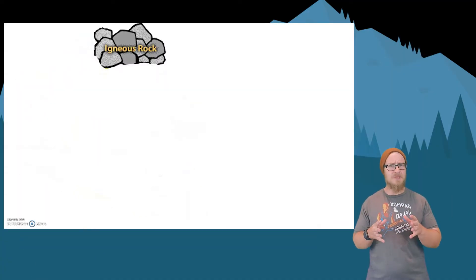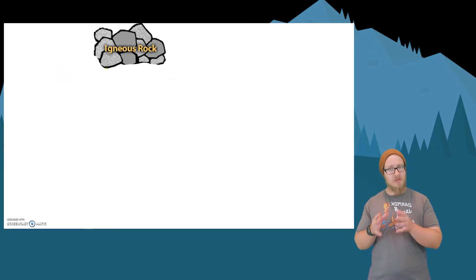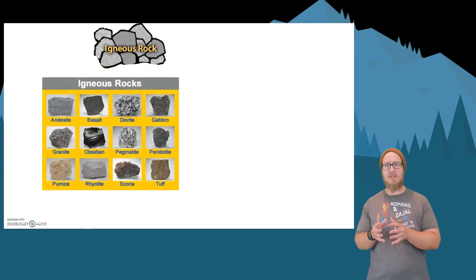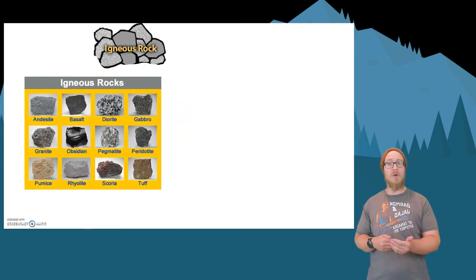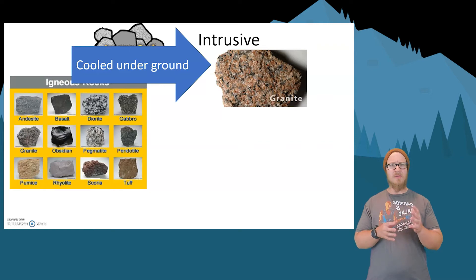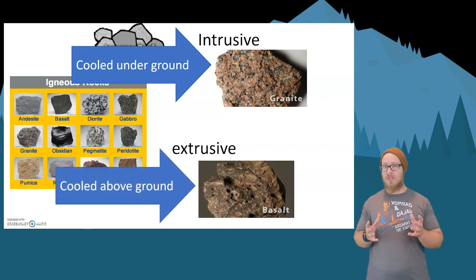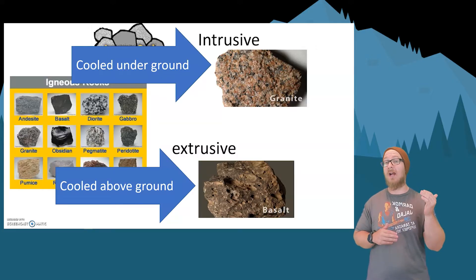There are many different types of igneous rocks, and where they cool is important. Igneous intrusive rocks cool slowly underground and generally result in very pretty looking rocks with crystals in them. Igneous extrusive rocks cool very quickly above ground and are typically less dense.